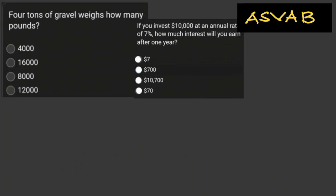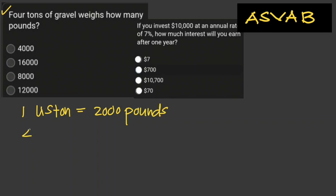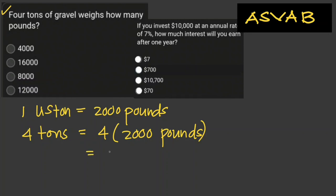Let's try more problems. Four tons of gravel weighs how many pounds? One U.S. ton equals two thousand pounds, so four tons is just equal to four times two thousand pounds, which equals eight thousand pounds.